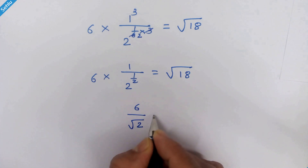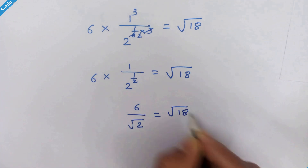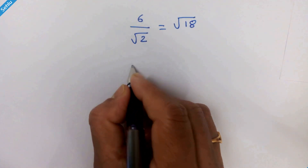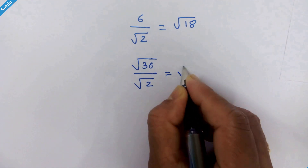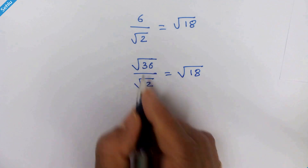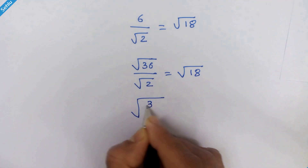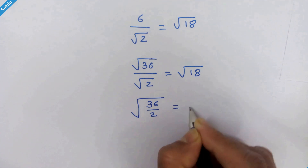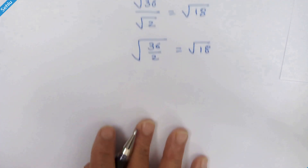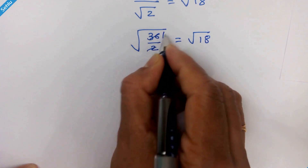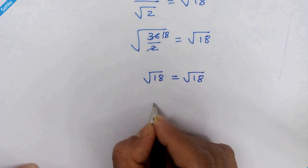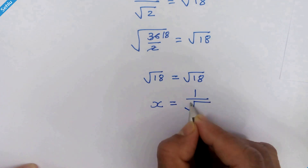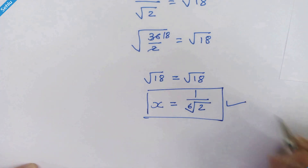Continuing the verification: 6 / √2 = √36 / √2 = √(36/2) = √18. Since 18 × 2 = 36, we have confirmed that √18 = √18. The answer is verified: x = 1 / ⁶√2.